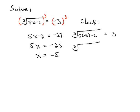We're going to have the cube root of negative 25 minus 2, which simplifies to the cube root of negative 27, and we know that the cube root of negative 27 is negative 3, so our answer checks.